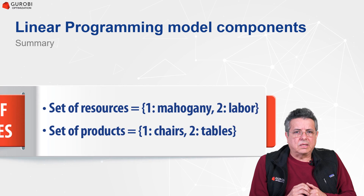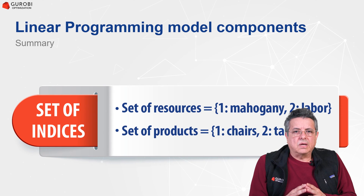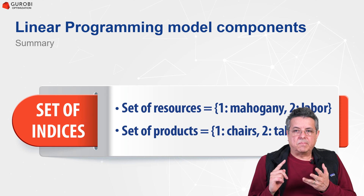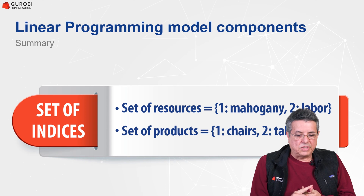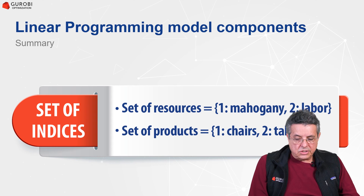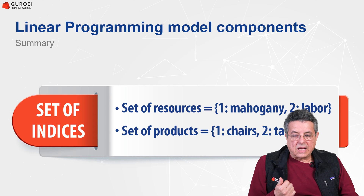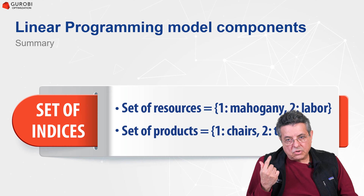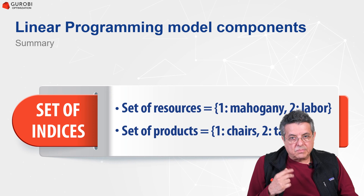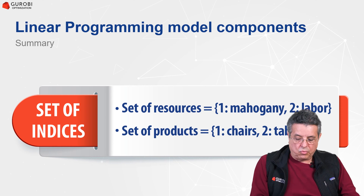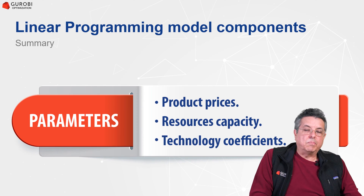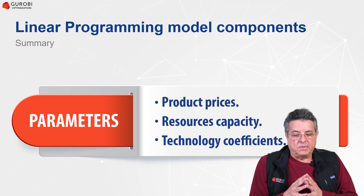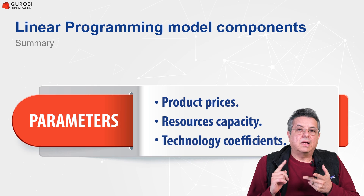In general, linear programming problems have five components: sets of indices, parameters, decision variables, constraints, and objectives. For this furniture problem, we have the set of resources — Mahogany (index 1) and labor (index 2) — and the set of products — chairs (index 1) and tables (index 2). We have three types of parameters: product prices, resource capacity, and technology coefficients.